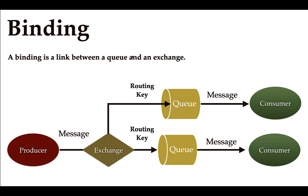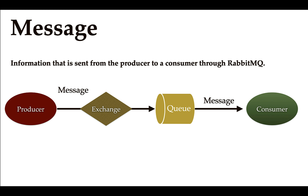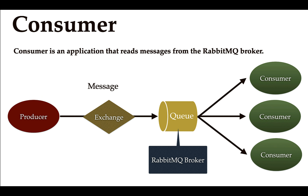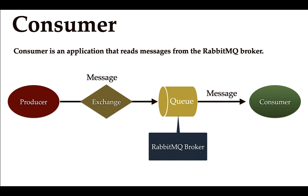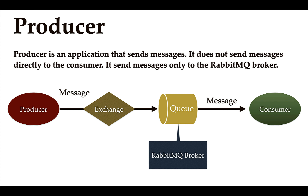These are the important RabbitMQ core concepts — producer, consumer, queue, message, exchange, routing key, and binding — that we frequently use throughout this course. We'll understand more about these concepts whenever we implement RabbitMQ in a Spring Boot application.